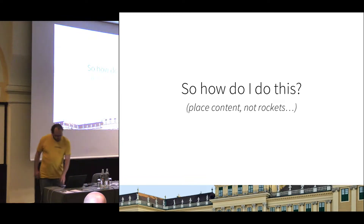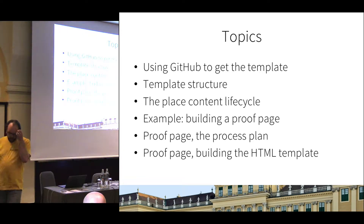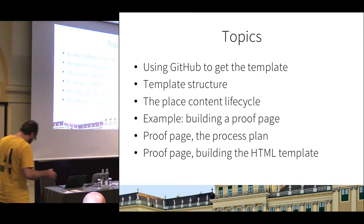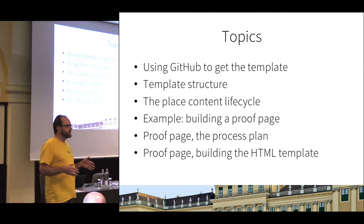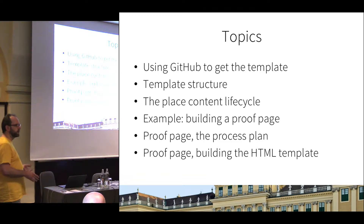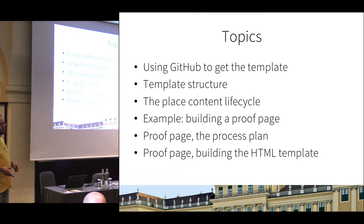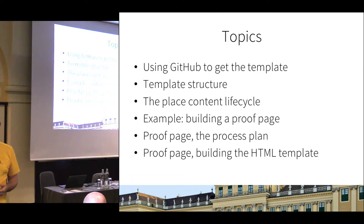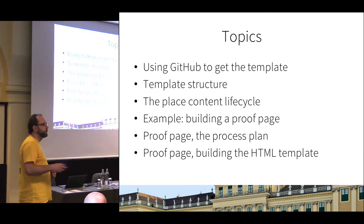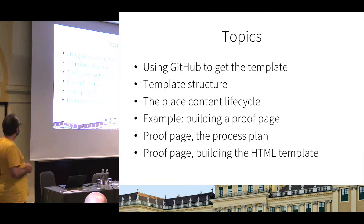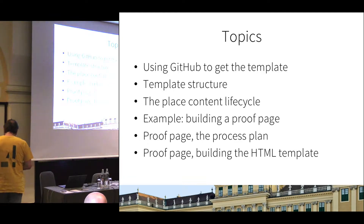So how do we get started with Place Content? This is roughly what I want to cover. Starting with GitHub and explaining what we do at the moment — I'm under no misconception that it's the best or final way to do it, but I can show you where we are and then you can tell me why it's wrong. The second thing is templates for Place Content — there is a template for Place Content. You can take one of the existing examples, throw away what you don't like, and start from there.